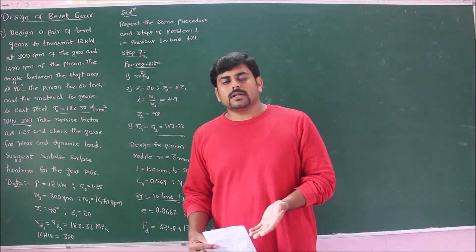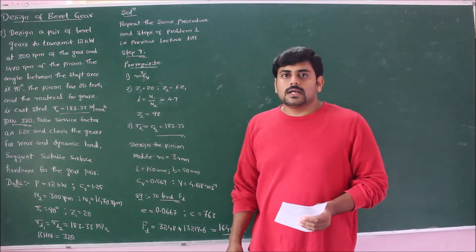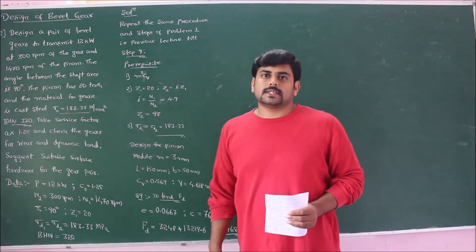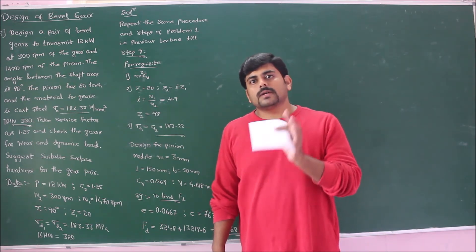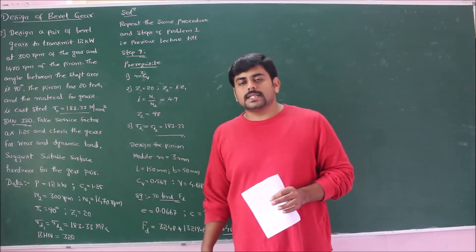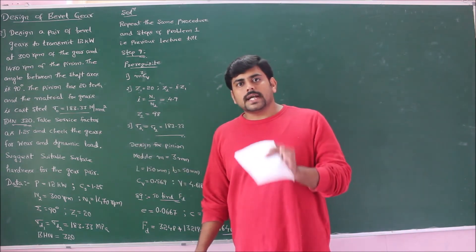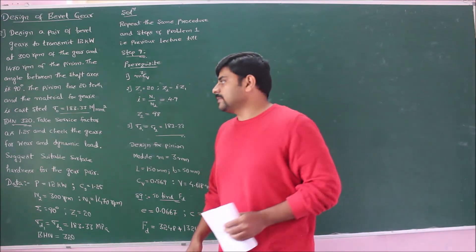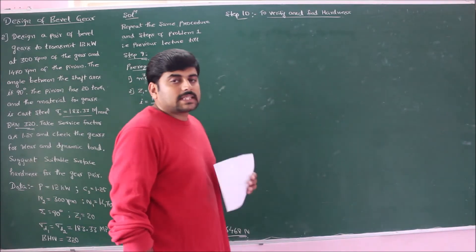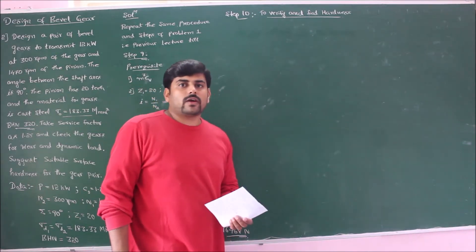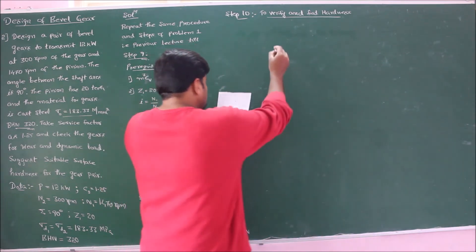Up to this point, follow the same steps as Problem 1 from the previous lecture. Now in step 10 the problem deviates, because the BHN is given in the question. We must first verify the given BHN of 320. From equation 12.15D (page 208), the endurance stress is given by: σ_endurance = 2.75 × BHN − 70.